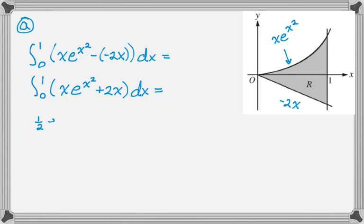And that is, so integrating x e to the x squared is going to give you 1 half e to the x squared. So what I did there was I made u equal to x squared. du would be 2x, so I need a 2 and a 1 half. So anyway, I end up at 1 half e to the x squared. And then the integral of 2x is obviously x squared. And that's going to go from 0 to 1.